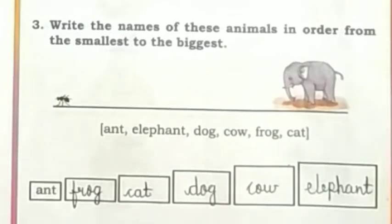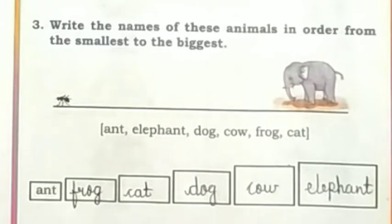Write the names of these animals in order from the smallest to the biggest: ant, frog, cat, dog, cow, elephant.